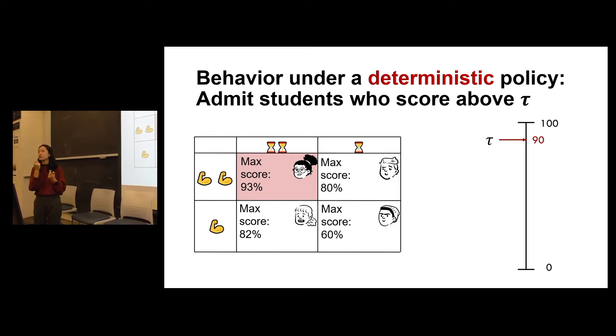All the other students will find the effort too costly, they won't be able to reach the threshold, they would choose to put in zero effort and score zero. But notice here that we're kind of facing an unhappy situation because our goal really is to admit students with high skills. But we cannot admit the student with the high skill and low budget.